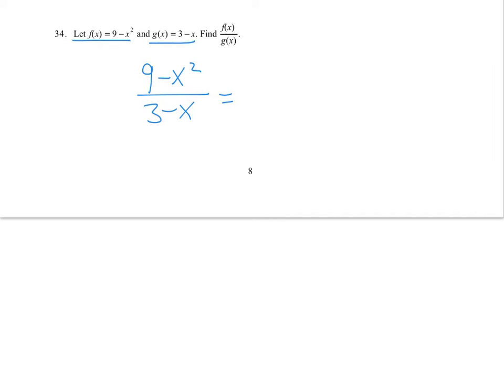In this case, you might recognize that 9 minus x squared is the difference of two squares, which is 3 minus x and 3 plus x. So to finish this up, we can do 3 minus x on the bottom. What you might notice is that the difference of two squares parts lets you cancel something out. So you end up with 3 plus x as your final answer.